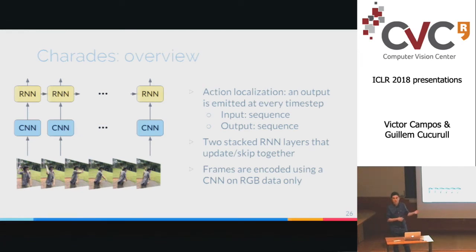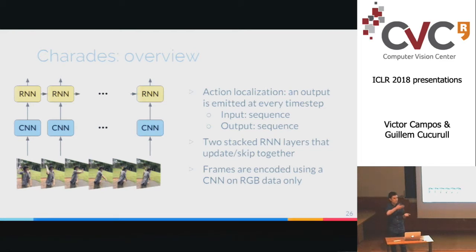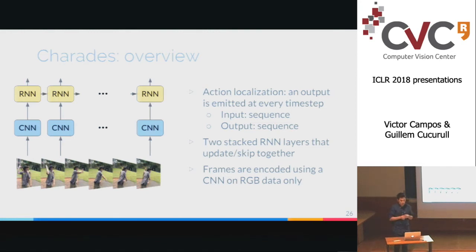Now let's move to the second experiment: action localization on video using the Charades dataset. Here we have both an input and output sequence — a many-to-many task requiring classification at every time step. We use two stacked RNN layers, using the top hidden state to decide whether to update or skip. We take RGB frames, feed them through a VGG16 CNN, and give the features to the RNN — no optical flow information used.